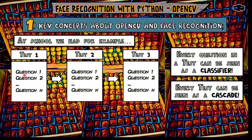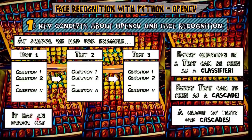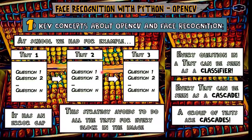So every question is a classifier, and the whole test is a cascade. A group of tests are cascades. For us to pass a test, there is no need to answer all questions correctly — for example, we need at least 70% of the answers to be correct so we can move to the next test. OpenCV does the same thing: it has an error gap, which means that in a cascade, not all classifiers need to pass for it to move to the next cascade. Dividing into cascades is a very good strategy because it avoids running all the tests for every block in the image. That's why nowadays it's possible to do face recognition in real time.